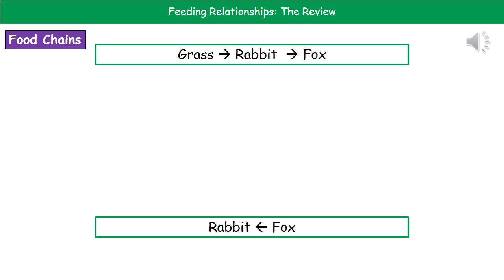When writing food chains, you write the names of the organisms and between each organism you put an arrow in. Remember that arrow has to point in the direction the energy is flowing in — so it should point from the grass to the rabbit, and from the rabbit to the fox.